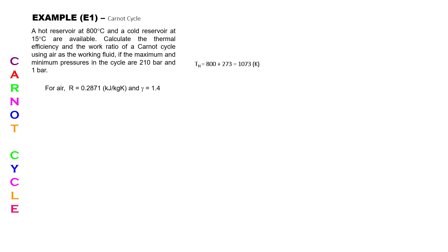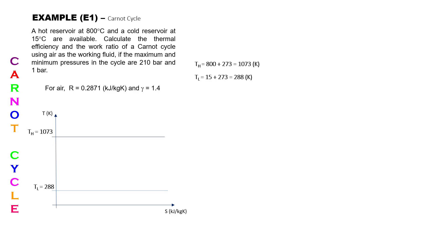Adding 800 with 273 gives 1073 Kelvin, and the low temperature is 288 Kelvin. Now you draw your TS diagram, putting in both temperature lines which represent the isothermal processes — the high temperature at 1073 and the low temperature at 288.